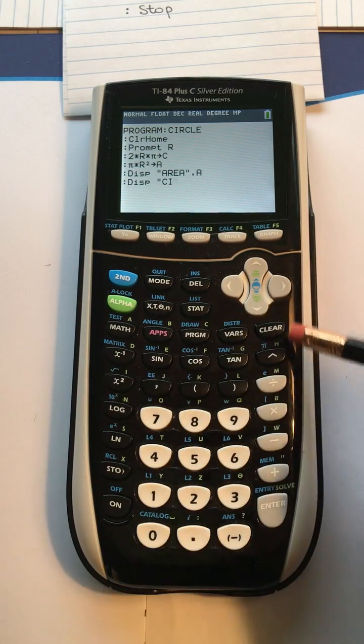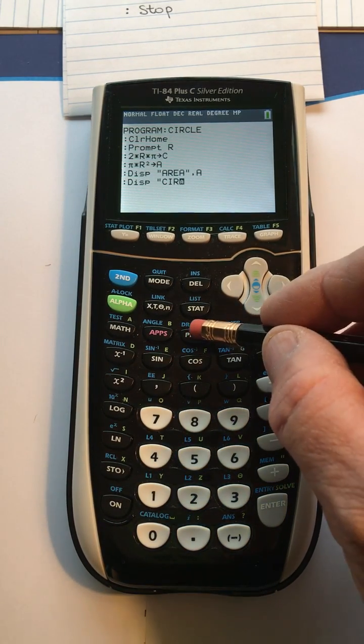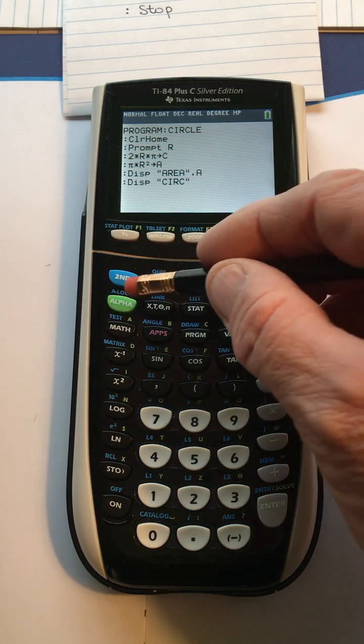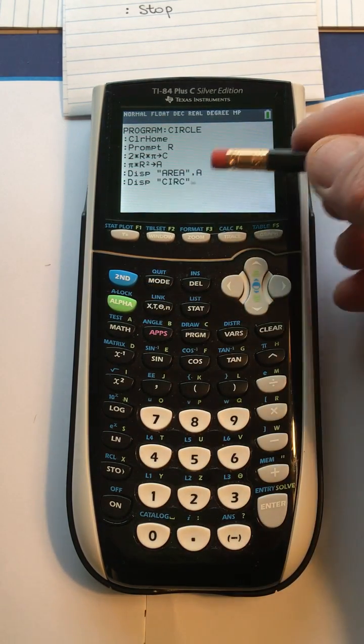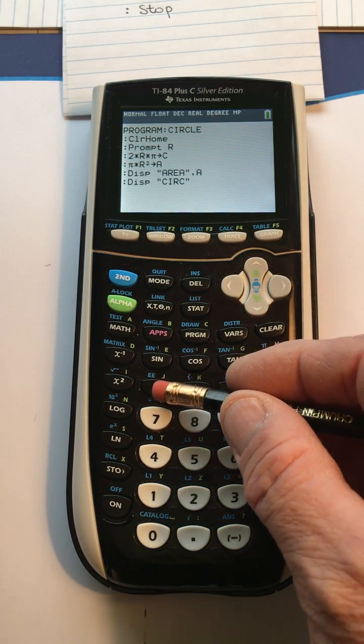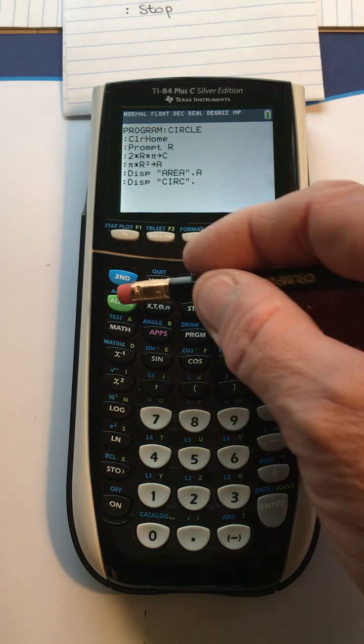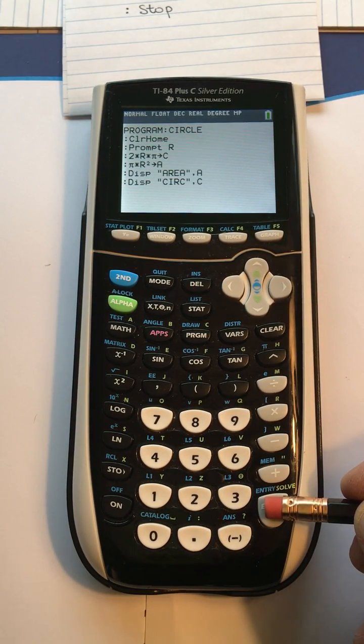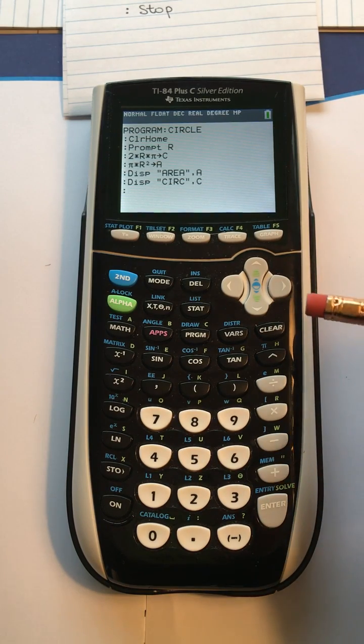C, I, R, C, and then close the quotes. Now press alpha to take it out of alpha mode. Notice the cursor is now blank or solid. Put comma, and then we have alpha C. And now we want to, once we've done that, we want to tell the calculator to stop.